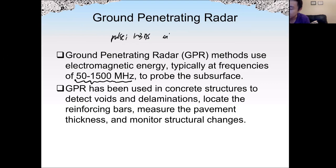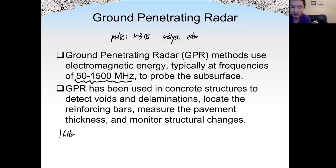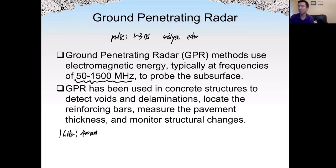GPR analyzes the echoes that reflect back. For example, at a frequency of one gigahertz, the penetration can be as deep as 400 millimeters — around 15 inches. This is not very deep because increasing the frequency causes energy to dissipate faster, so penetration is limited. However, because of the high frequency, the resolution is pretty high.